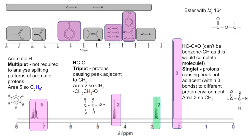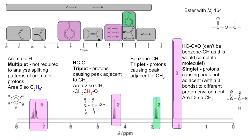The final peak I'll look at is this one here. It's in the same range again, and since we've dealt with the ester environment, the likelihood is it's a hydrogen bonded to a carbon that's then bonded to a benzene ring — a benzene–CH2 environment. The fact that it's a triplet tells us the protons are adjacent to a CH2 group. The area is two, so there are two protons in this environment, meaning we must have a benzene ring with a CH2 group attached and then an adjacent CH2 group.